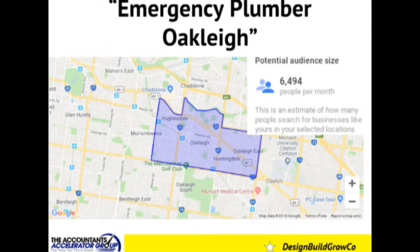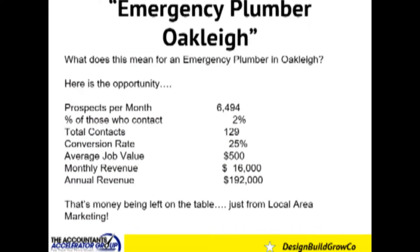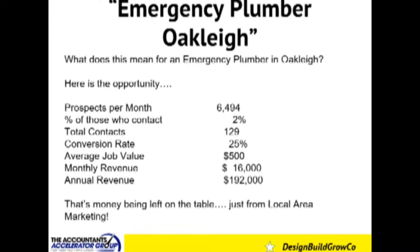There are just shy of six and a half thousand people — or queries — a month looking for an emergency plumber in that area. You'd need ten-plus vans to handle that, and that puts a lot of food on the table. That is an extraordinary number — roughly 78,000 people per annum. If our listeners could convert just two percent of those people per month, that would be 129 contacts. If we could convert 25% of those contacts into jobs with an average job value of $500, our plumbers would be generating $16,000 of additional revenue per month, or $192,000 per annum. That is an extraordinary opportunity from local area marketing.